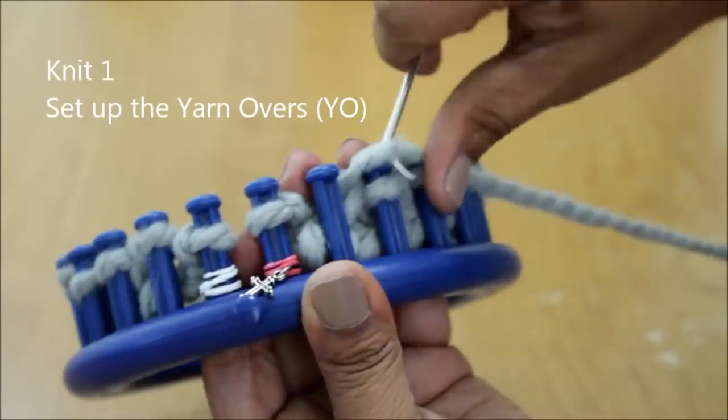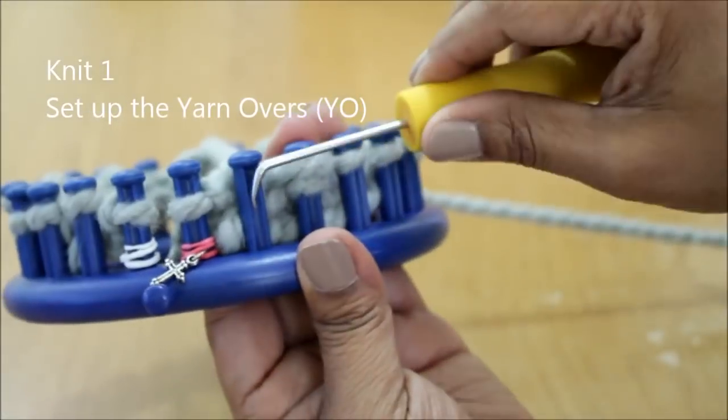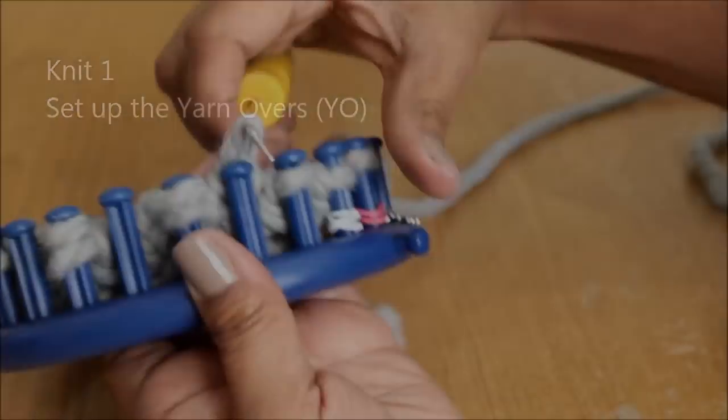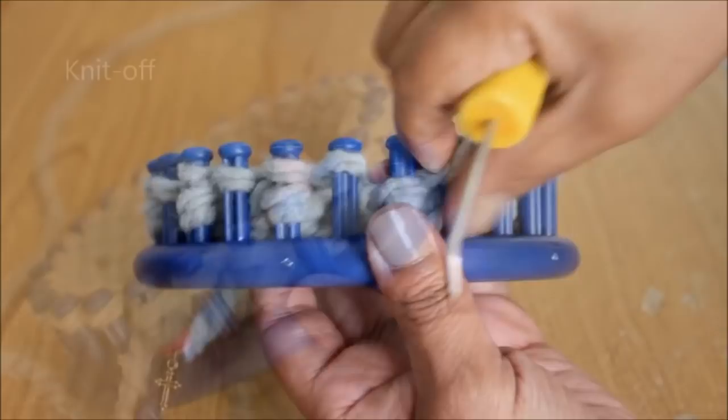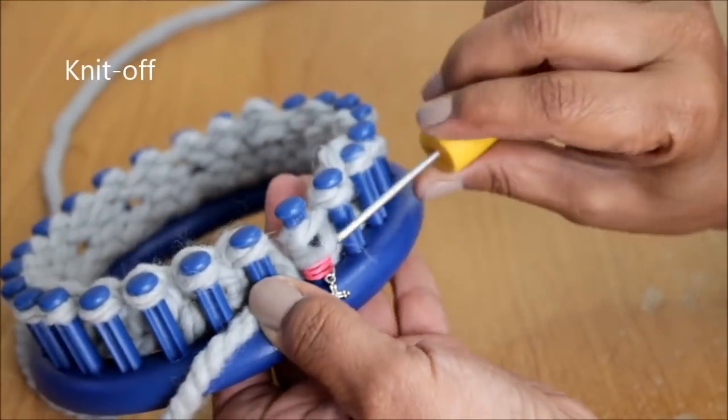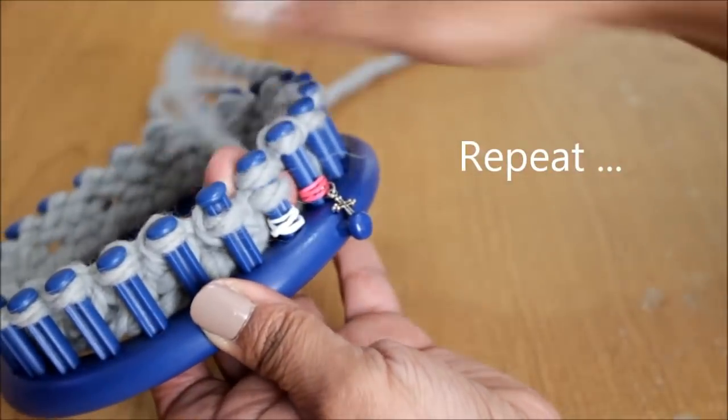Knit one, move the loops for the yarn over. Then wrap all the pegs. Knit off. And once you're done with that, you just repeat the process.